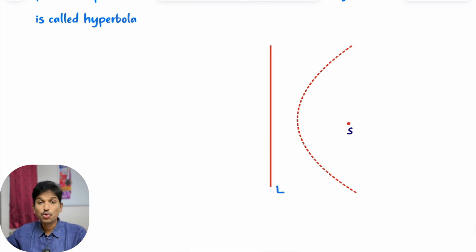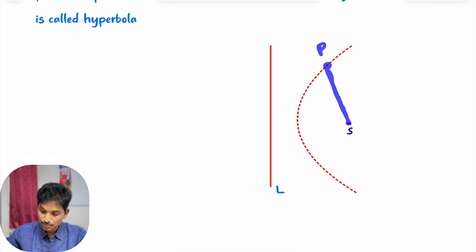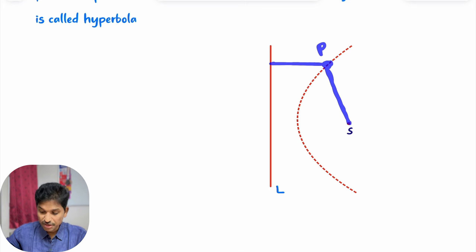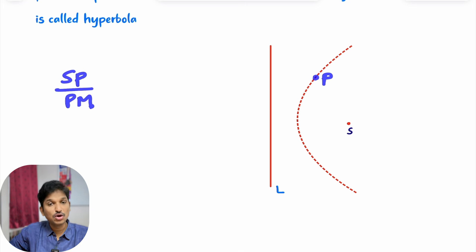Consider points in a plane. Here the distance from point P to point S — this is the distance from point P to the fixed point, and this is the distance from point P to the fixed line. The ratio SP by PM is constant.